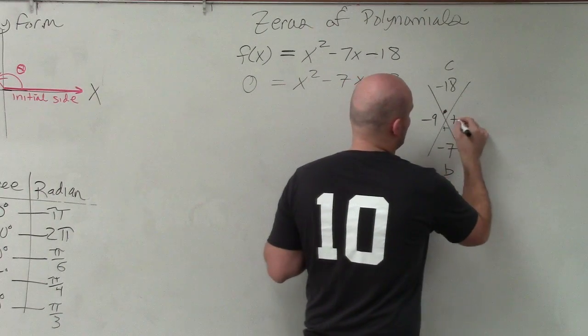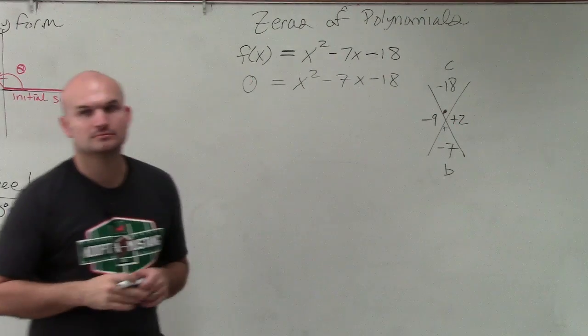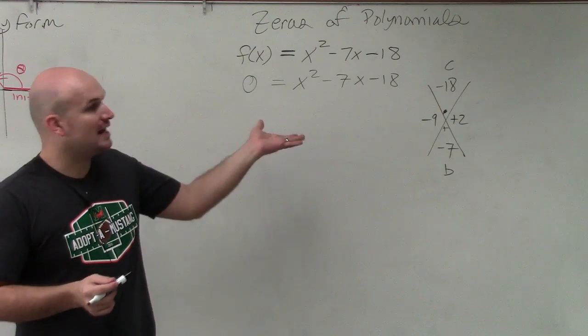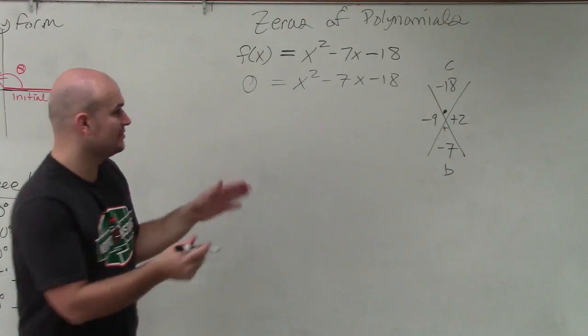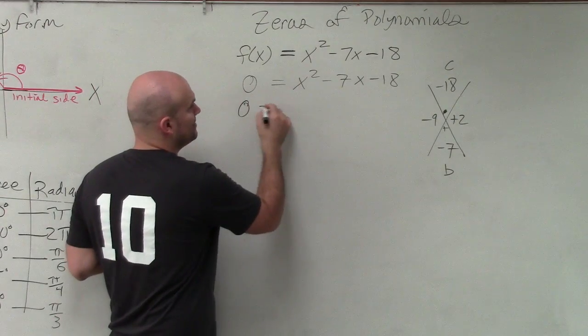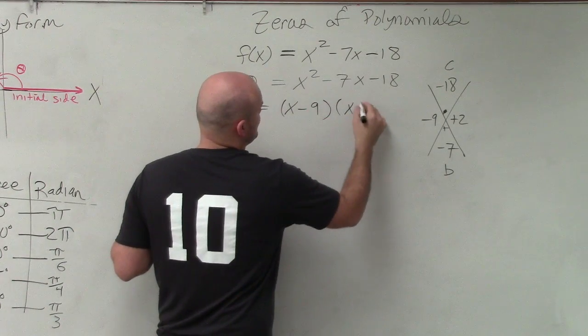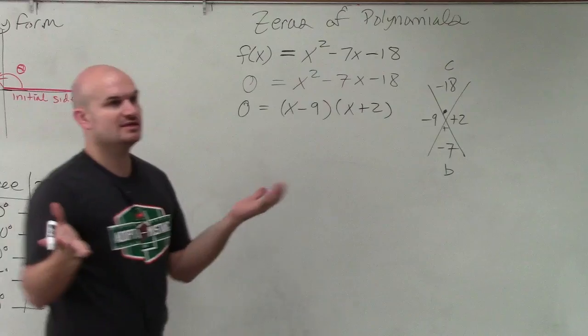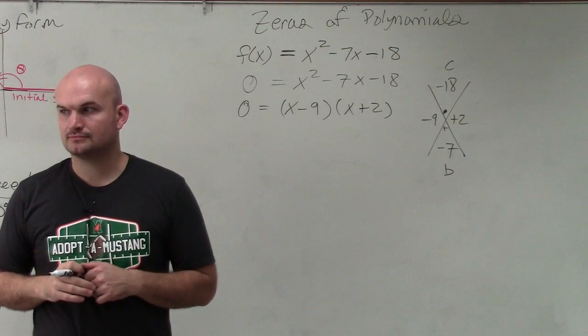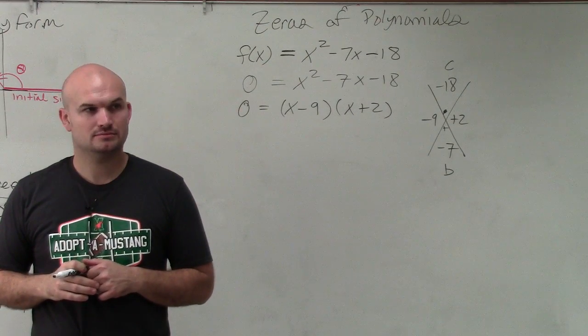Negative 9 and positive 2. OK. So now that we know what the solutions are, we simply can write this in factored form as x minus 9 times x plus 2. Does everybody follow me? Yes, no? OK.